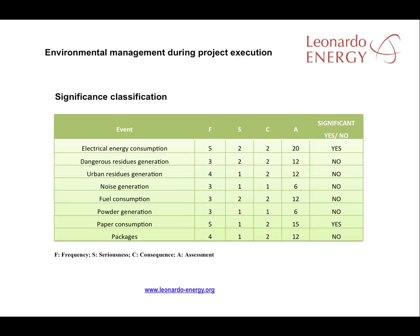Here's a different environmental management classification of normal aspects in a solar project. This table uses seriousness plus consequences multiplied by frequency to generate an assessment score. For example, noise is a not very serious environmental impact — the consequence is not high, but the frequency is high. An assessment score for noise of 6 means it's not significant, while paper consumption with an assessment score of 15 is significant.